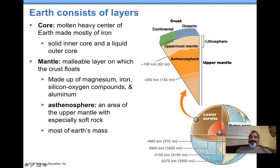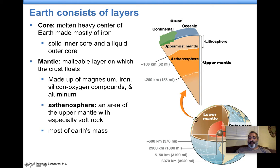The mantle is on top of that. This is most of Earth's mass right here. It's made of all these molten minerals like magnesium, more iron, silicon, and oxygen compounds. These are what make up rocks. Rocks are made out of these compounds. When these liquid molten rocks solidify, they make rocks.